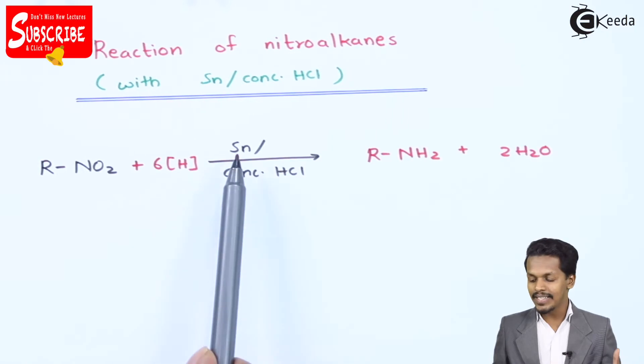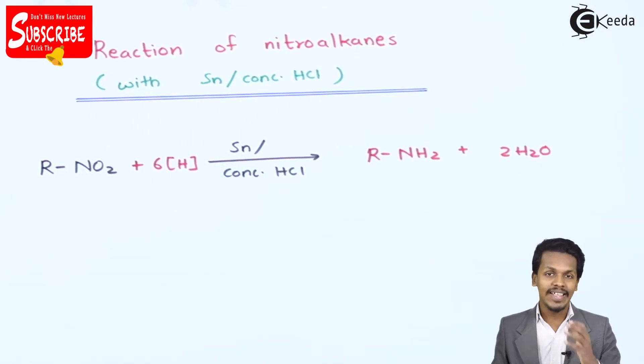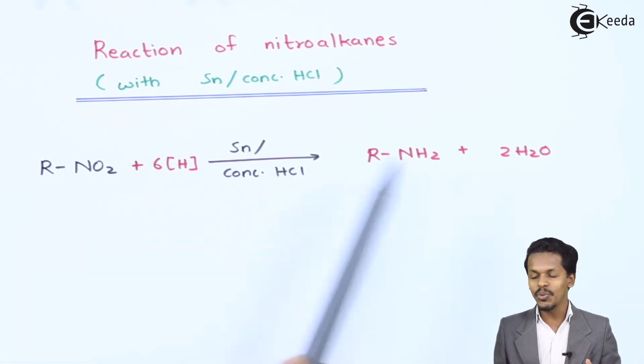Here basically we are using tin and concentrated HCl as a reducing agent and this will reduce the NO2 group into NH2 group. So this is how we can convert a nitroalkane into amine.